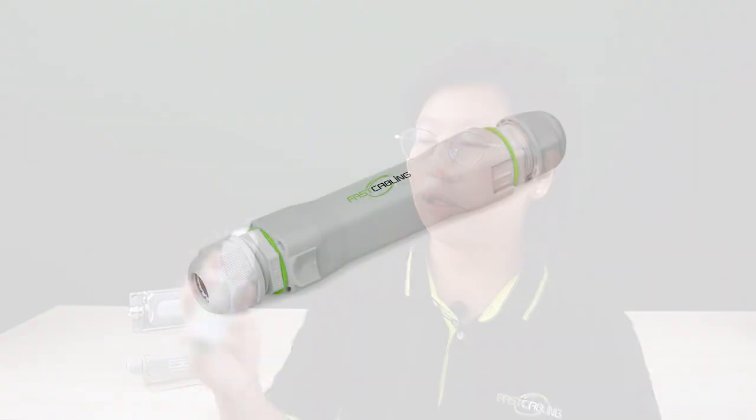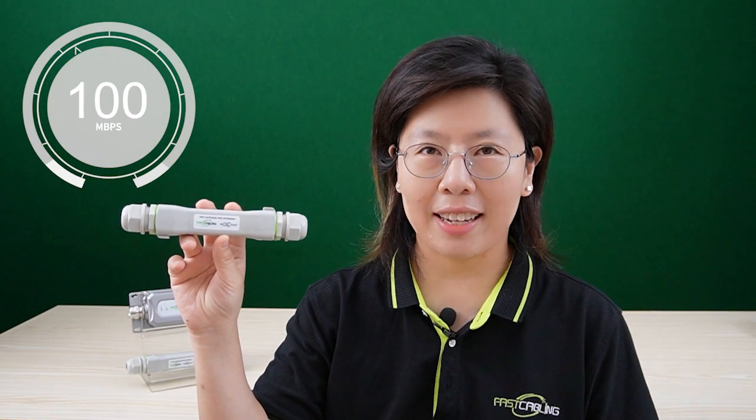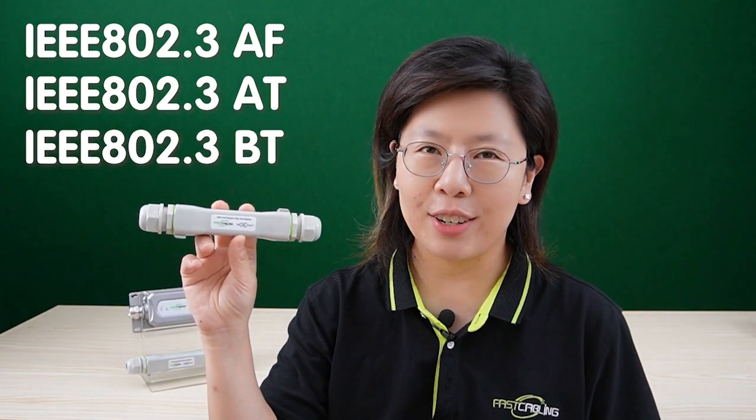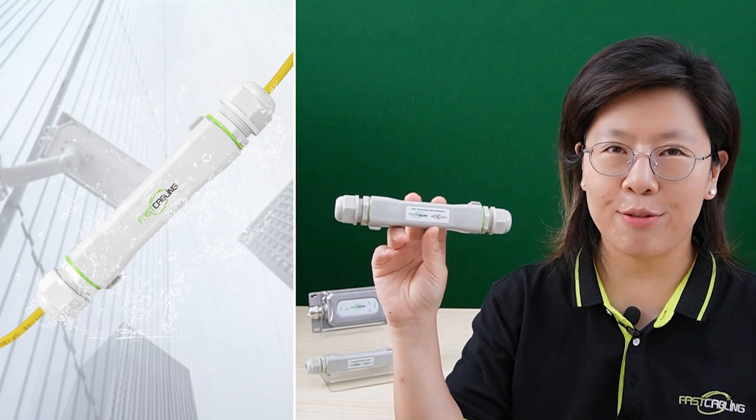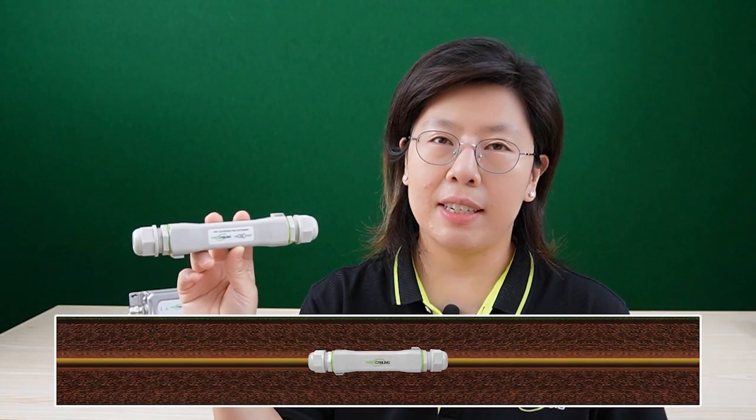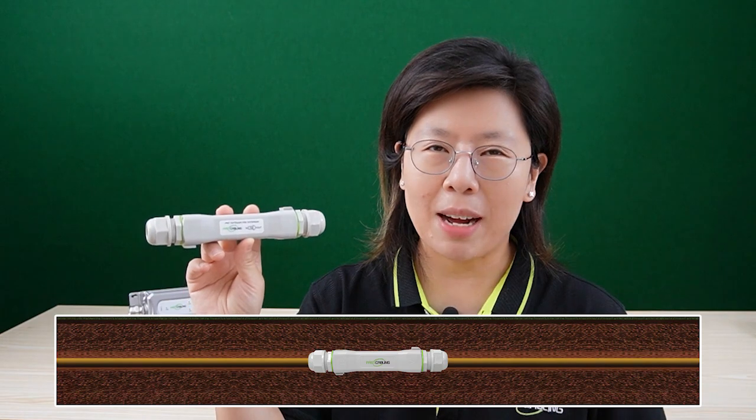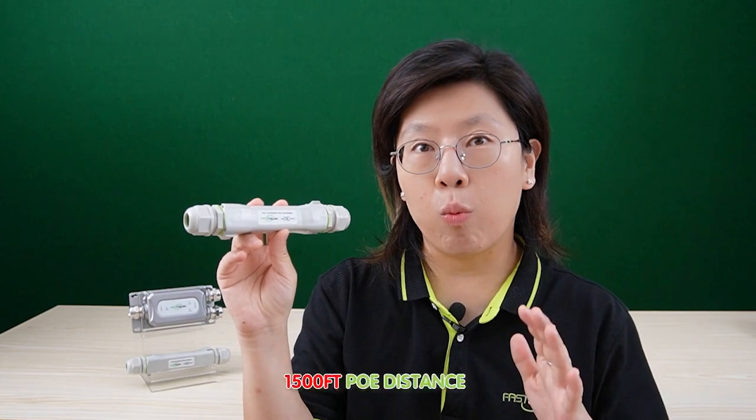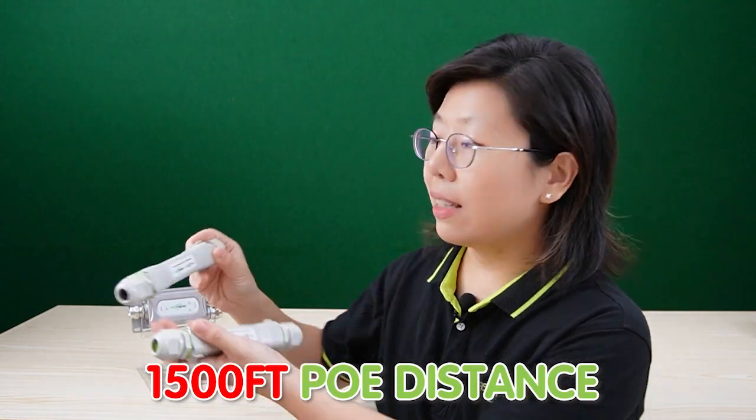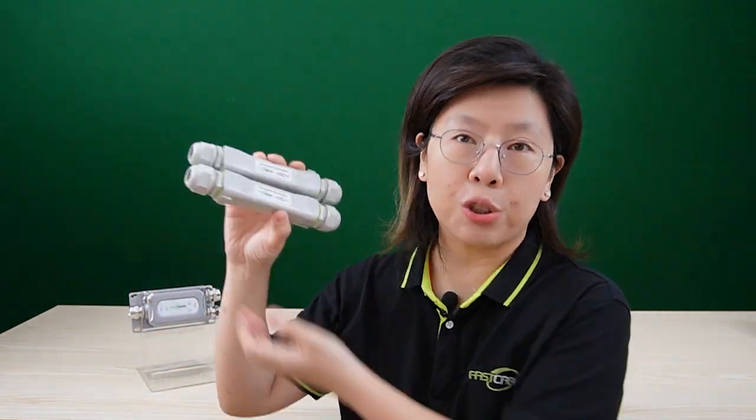We do have different types of PoE extender. This one here is our outdoor waterproof PoE extender, supporting up to 100Mbps data transfer rate. And it's compatible with IEEE 802.3 AF, AT, and BT standards, 60W of power output, and IP67 waterproof rated. You can even bury it under the ground without worrying about it.